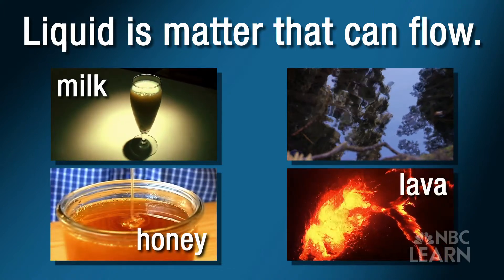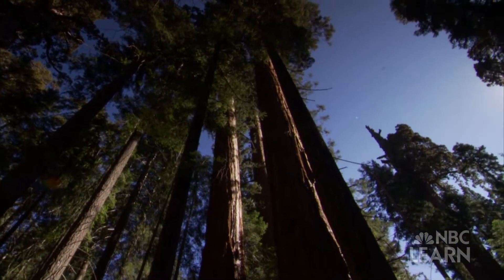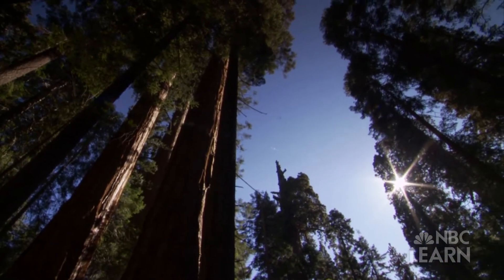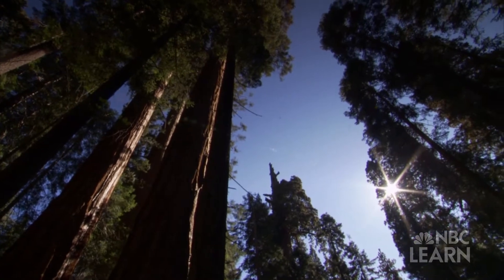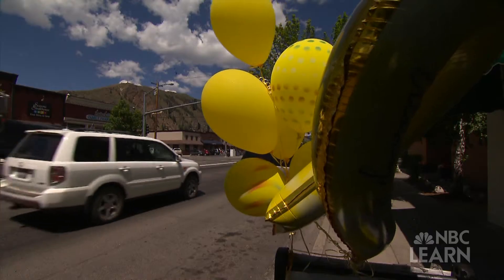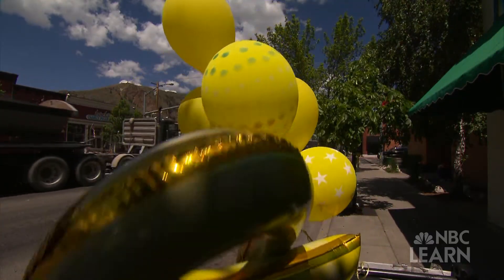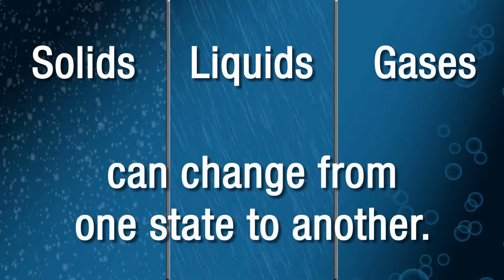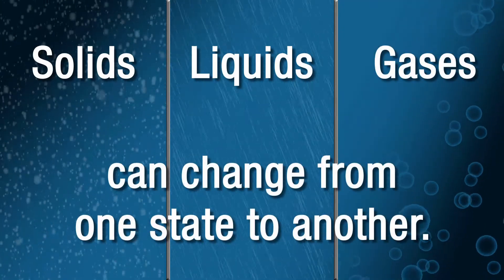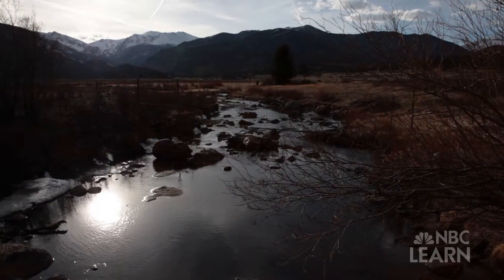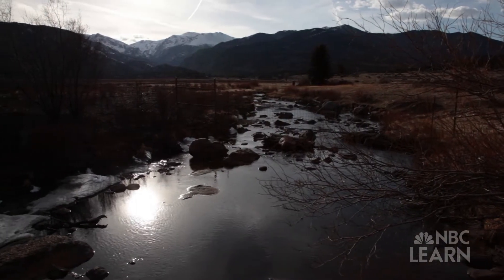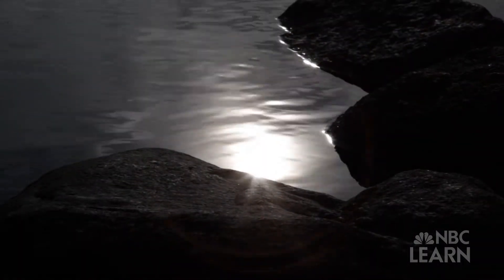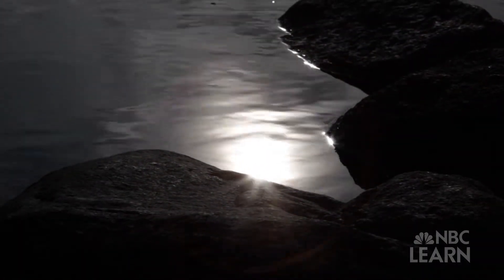And lava. A gas is a substance without a definite volume or shape. You cannot see many gases, like the oxygen we breathe or the helium that fills up a balloon. Solids, liquids, and gases can change from one state to another. One of the best examples of matter changing states is also one of the most plentiful and important types of matter on Earth.